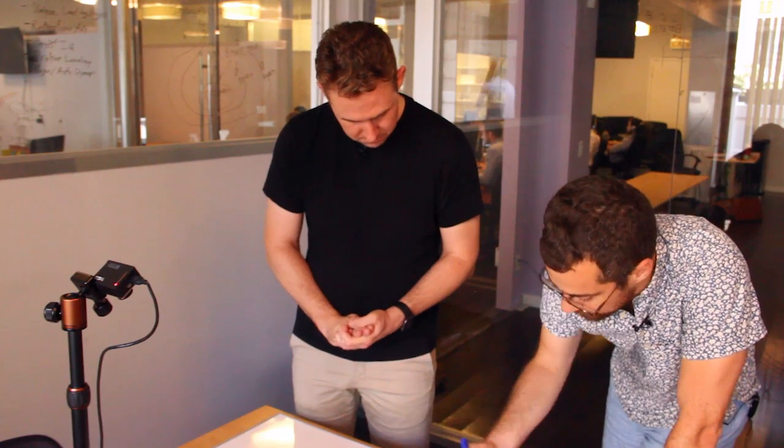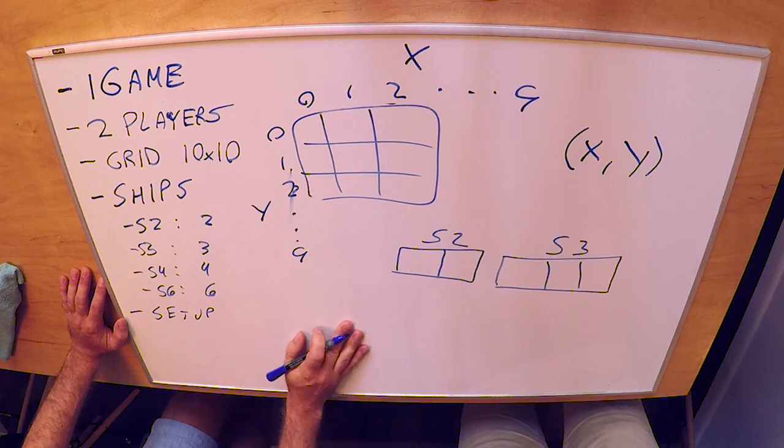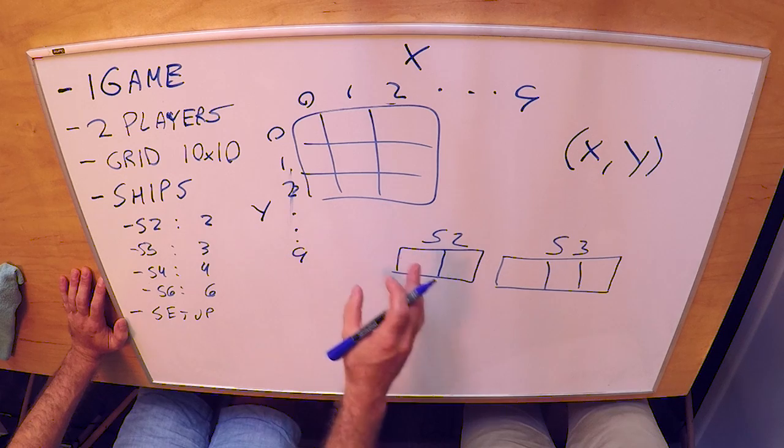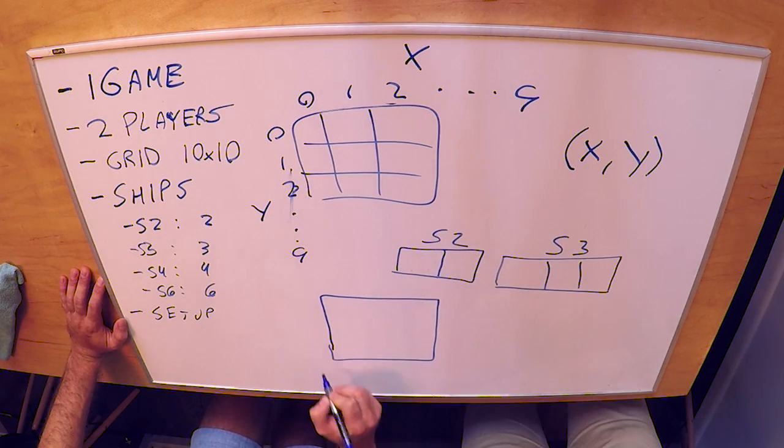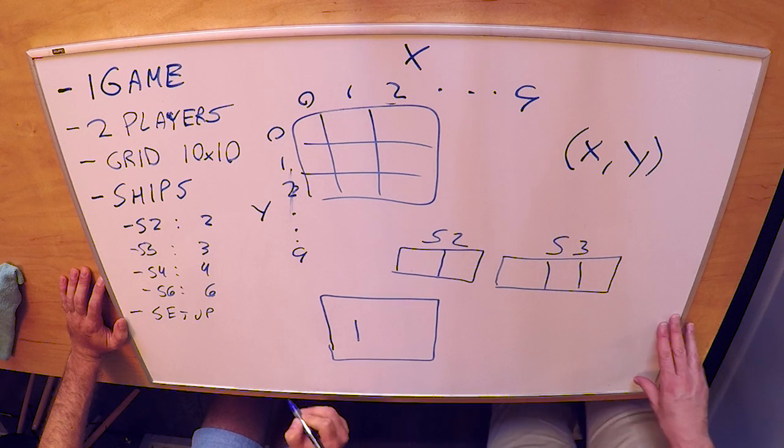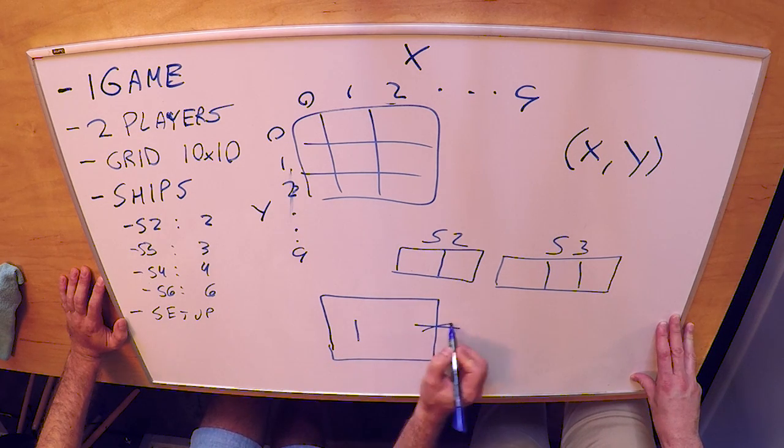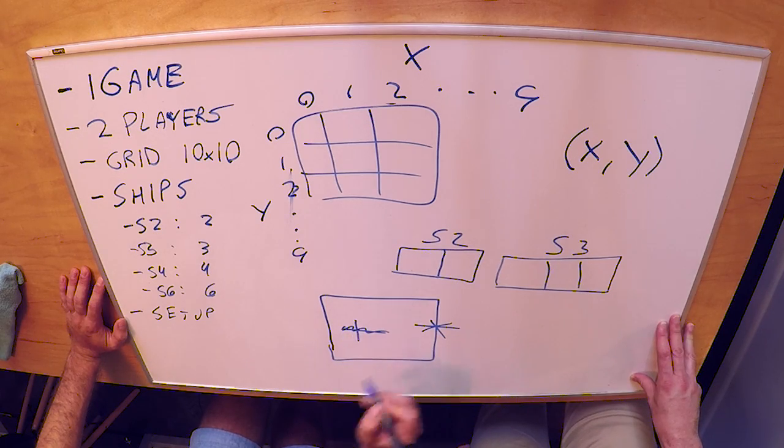So there are two phases in the game. There's a setup phase. During the setup phase what you're gonna do is you're gonna take each of the four available ships and you're gonna place them somewhere on your grid. There's a couple rules about how you can place them. So a ship might go there. That would generally be legal. But we can't have it go off the board, and we can't have it intersect another ship.